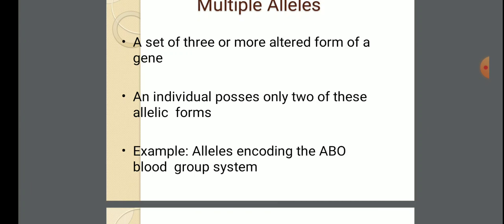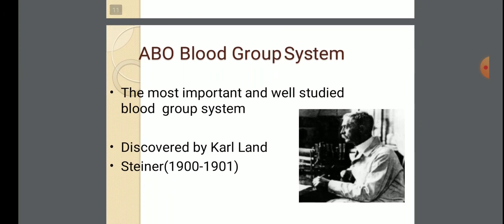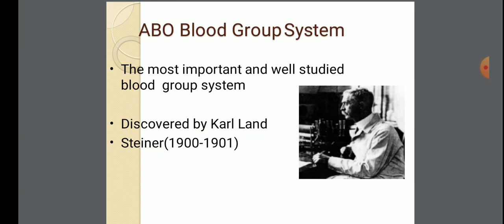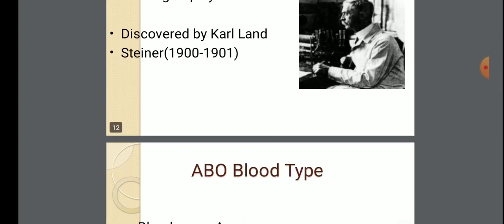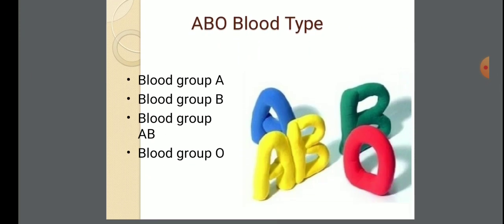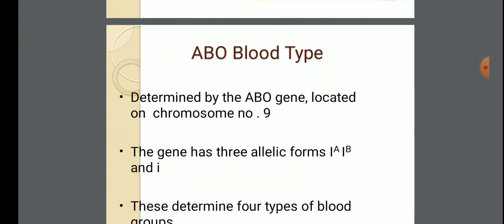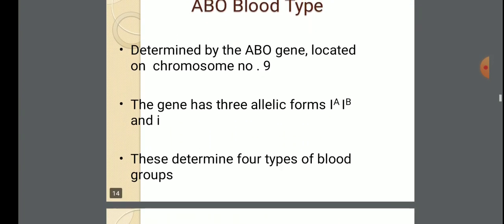An example is the alleles encoding the ABO blood group system. The ABO blood group system is the most important and well-studied blood group system, discovered by scientist Karl Landsteiner in 1900 to 1901. There are four blood group types: blood group A, blood group B, blood group AB, and blood group O. ABO blood type is determined by the ABO gene located on chromosome number 9. The gene has three allelic forms: IA, IB, and small i, which determine four types of blood groups.